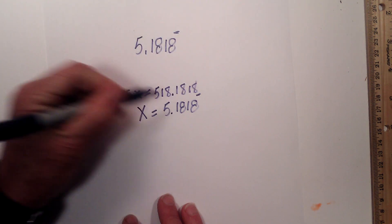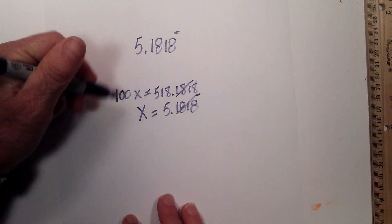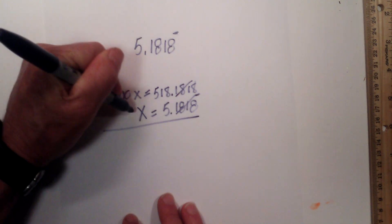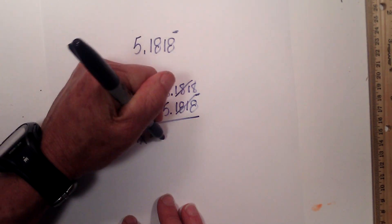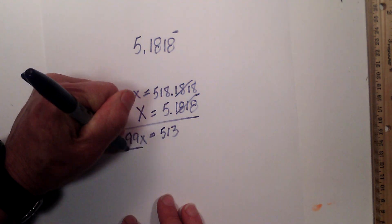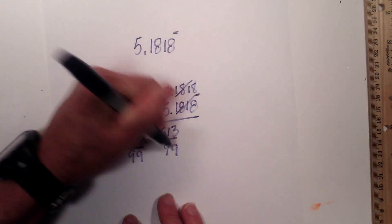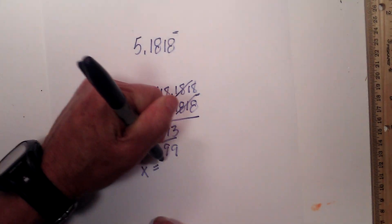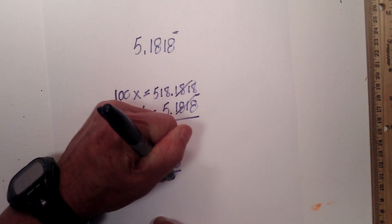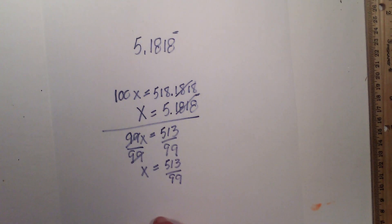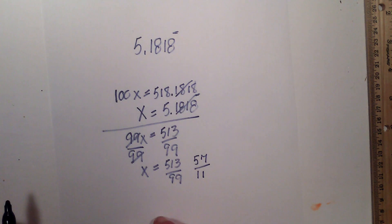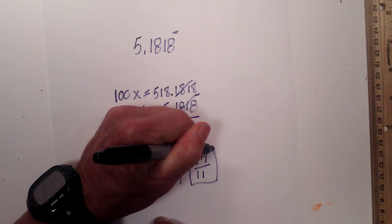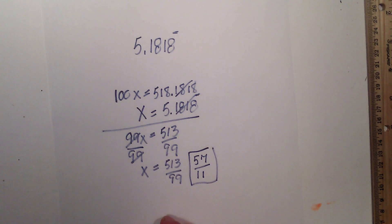Did a little better job with the decimal point on this one. These all cancel. 100 minus x is 99x. Got ahead of myself. These cancel. 518 minus 5 is 513. Divide each side by 99. These cancel. x is equal to 513 over 99. They both will be divisible. Let's see. What do they are divisible each by 9. So this becomes 57 and this becomes 11. So it is 57 elevenths.